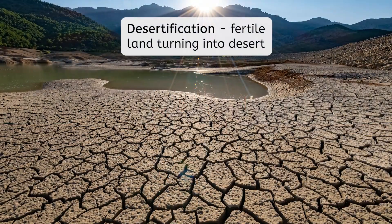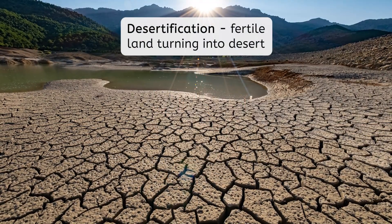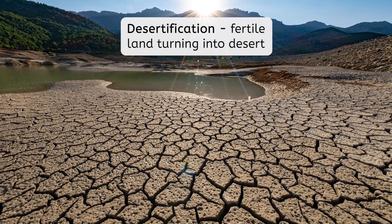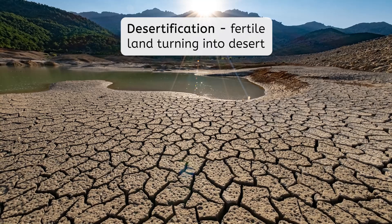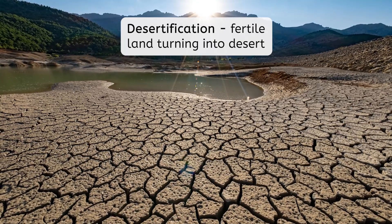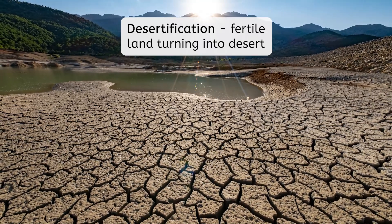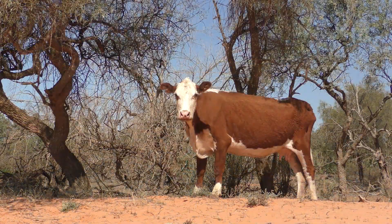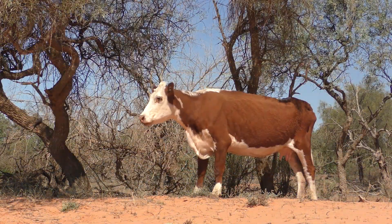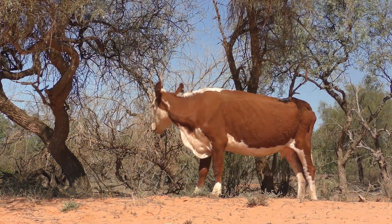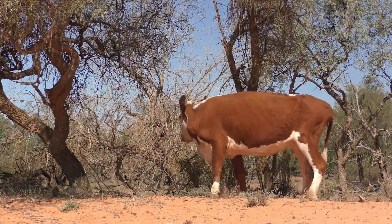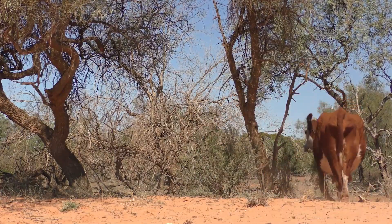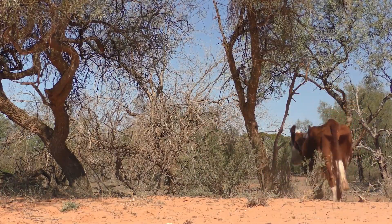Did you know that most deserts didn't used to be deserts? The process of desertification occurs as fertile land dries out and turns into desert biomes. This can be caused by natural or human factors such as rising temperatures, droughts, erosion, overgrazing, and deforestation.